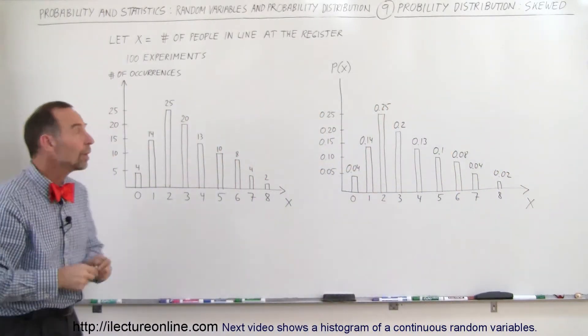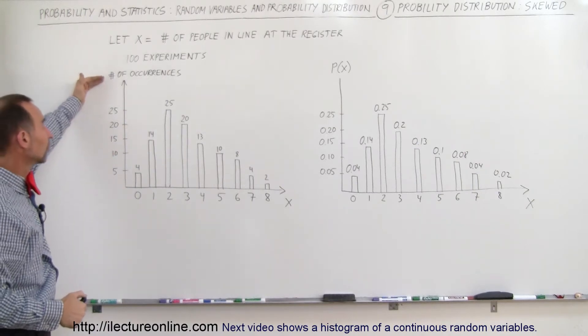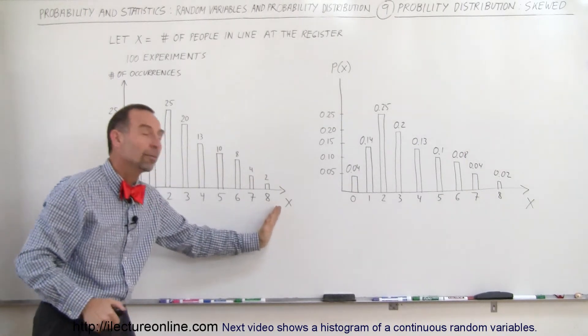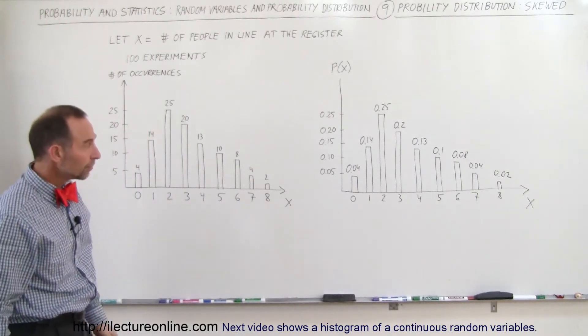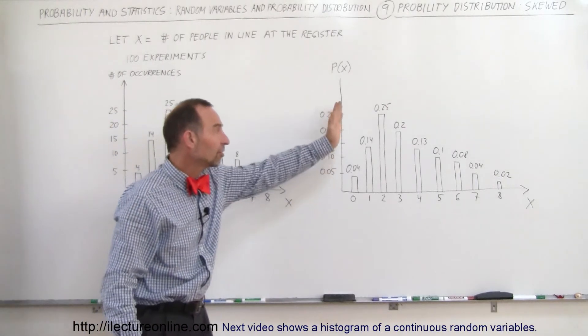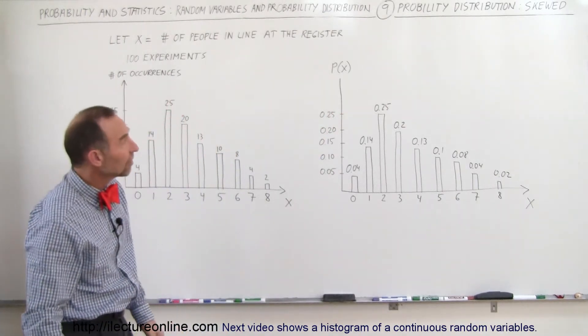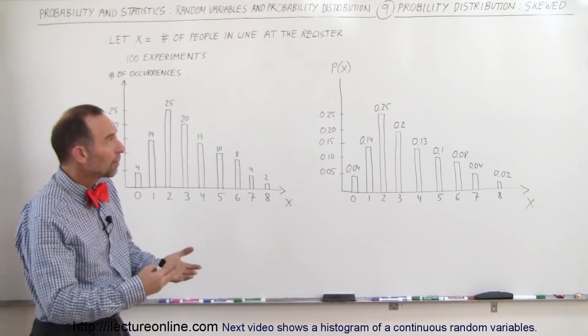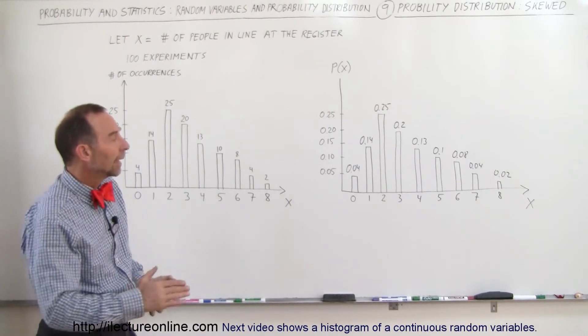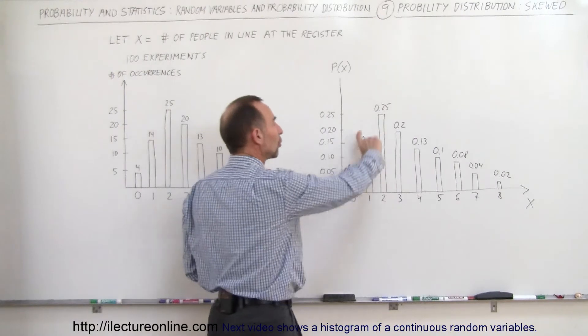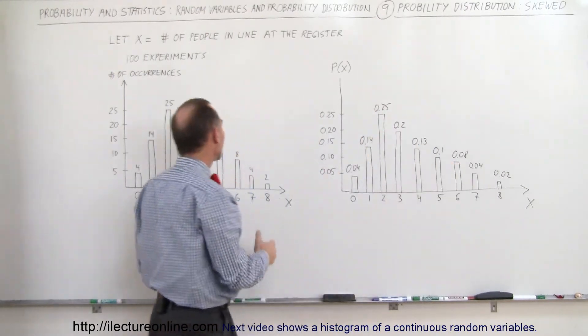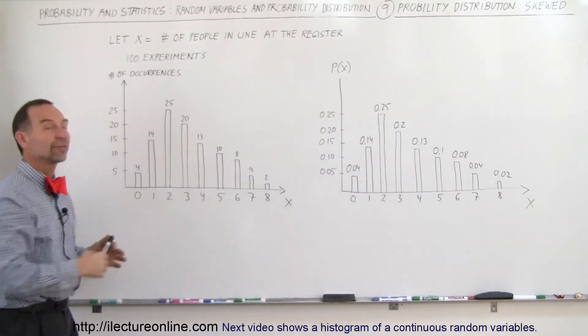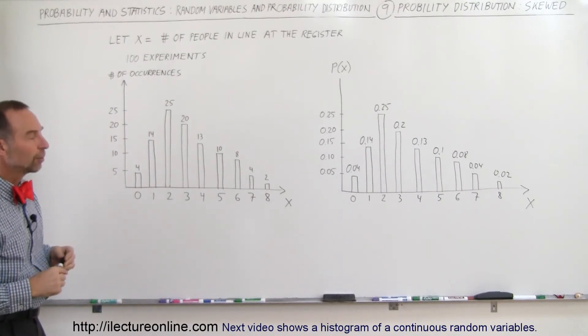So again, the difference between a graph that shows the number of occurrences versus all the possible outcomes, it looks exactly the same in shape as what we call a probability density graph, or probability distribution graph, and the only difference is that the totals add up to one for probabilities, and the total here adds up to the total number of experiments that we conducted to make this possible.